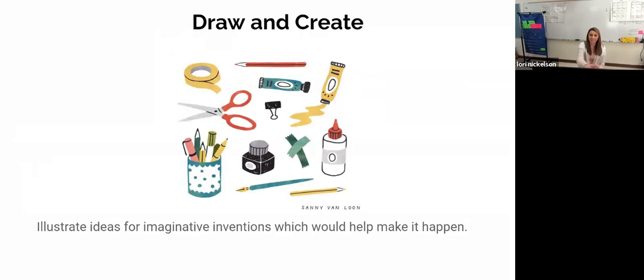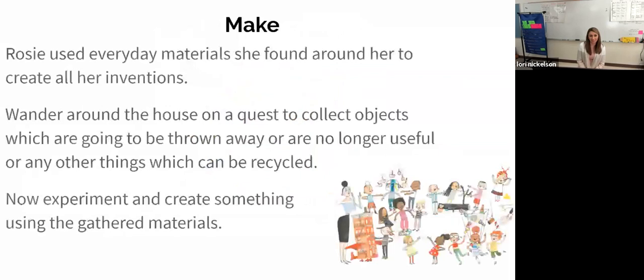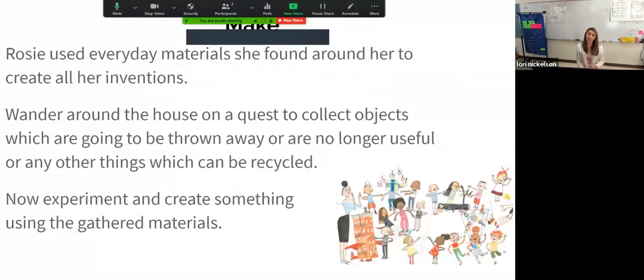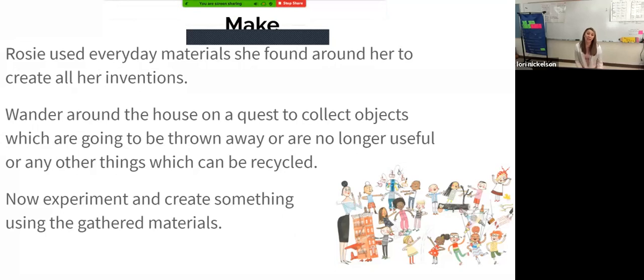If you don't want to do that one, the next challenge is to make something. Rosie liked to use everyday materials that she found to create her inventions. Think about your house around you, and the world around you outside. I want you to wander around on a quest to collect all the objects which are going to be thrown away, or are no longer full, anything that can be recycled. I want you to experiment with those items that you find, and I want you to use those to make something creative. Some fun examples that I like to use at home with my children, and when I was a little girl, would be toilet paper rolls, or paper towel rolls. When they're all used at home, you can make so many fun things with those. The ideas and possibilities are endless.